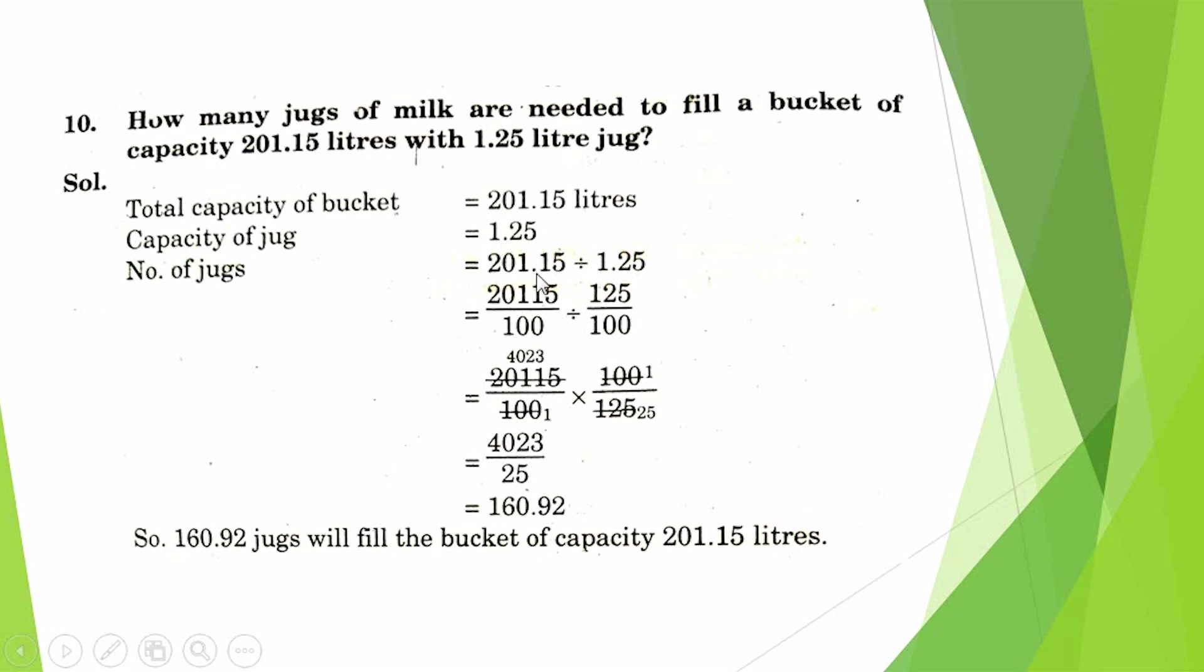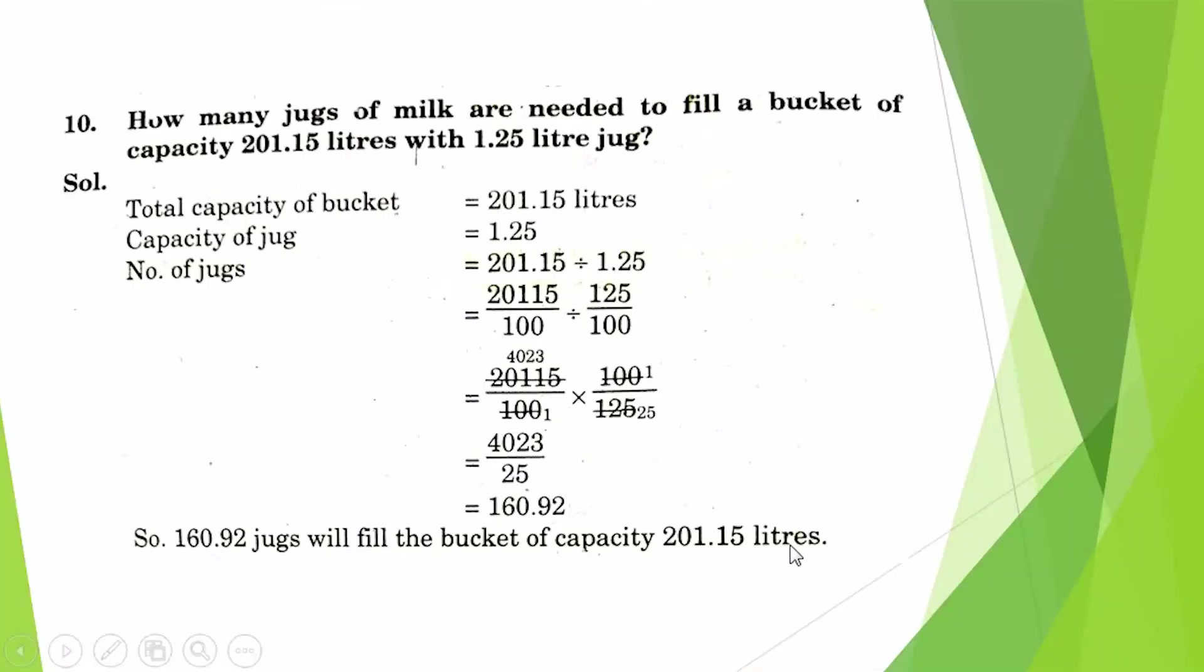We write 1 at the place of the point and write zeros after that. When we convert this division into multiplication, after cutting, the answer comes 160.92. So 160.92 jugs will fill the bucket of capacity 201.15 litres.